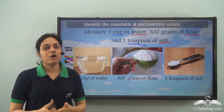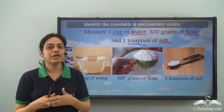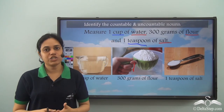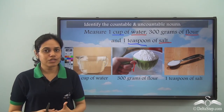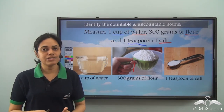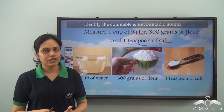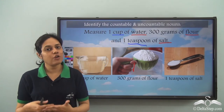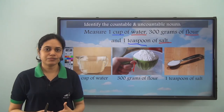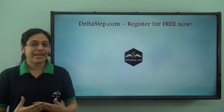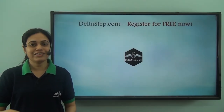To summarize: countable nouns are the nouns which can be counted using numbers, and uncountable nouns are the nouns which cannot be counted using numbers.